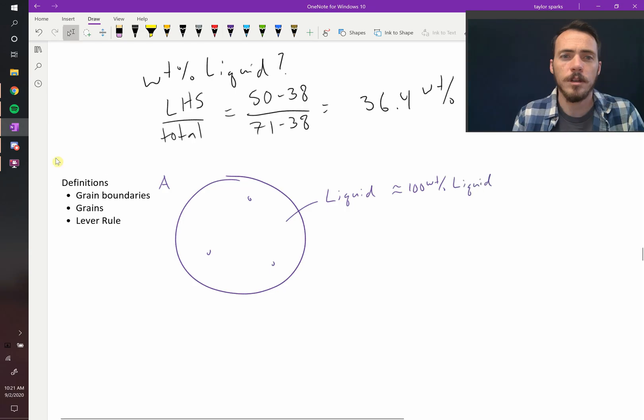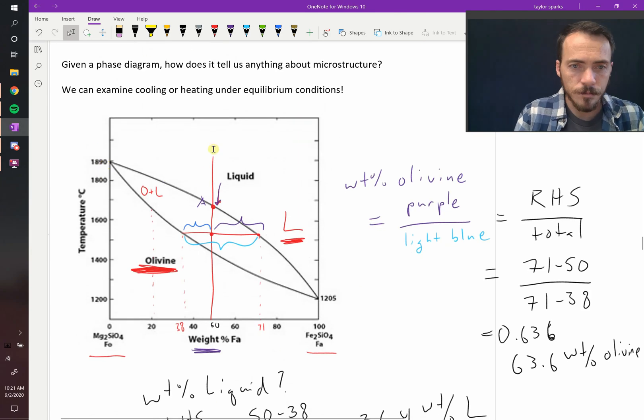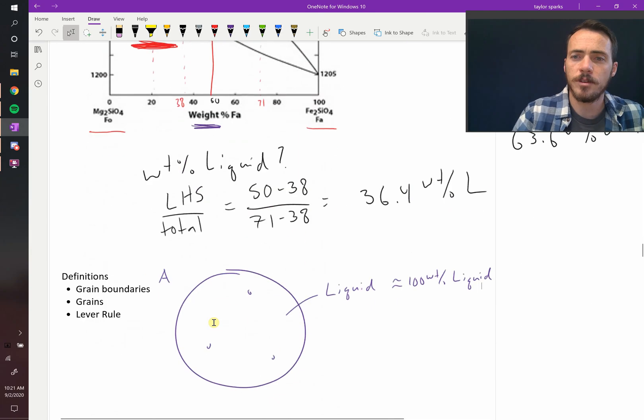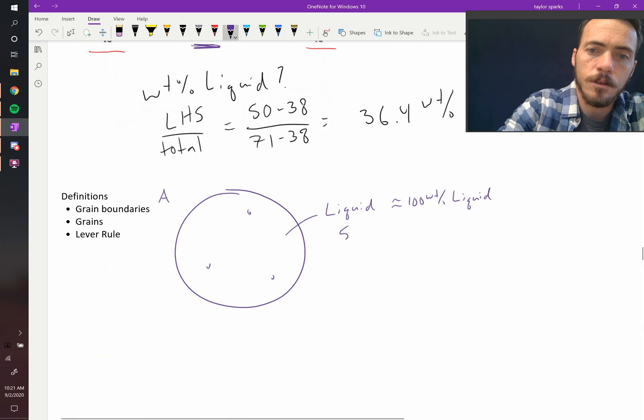And what would the composition be? Well, the composition was the initial composition, and so it's going to be 50 weight percent FA. 50 weight percent FA.